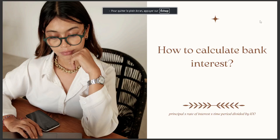Hello guys, and in today's video we're going to talk about how to calculate bank interest. The answer is principal multiplied by rate of interest, multiplied by time period, divided by 100.